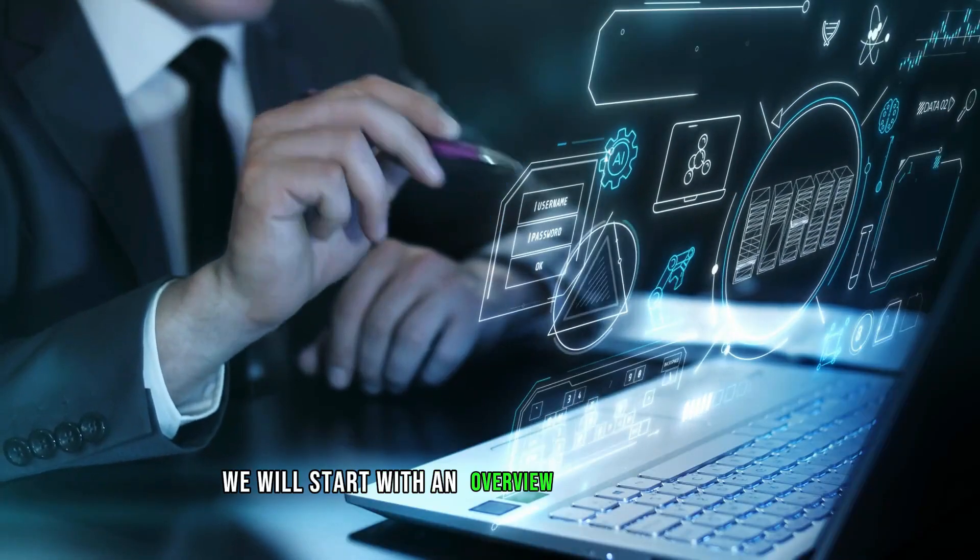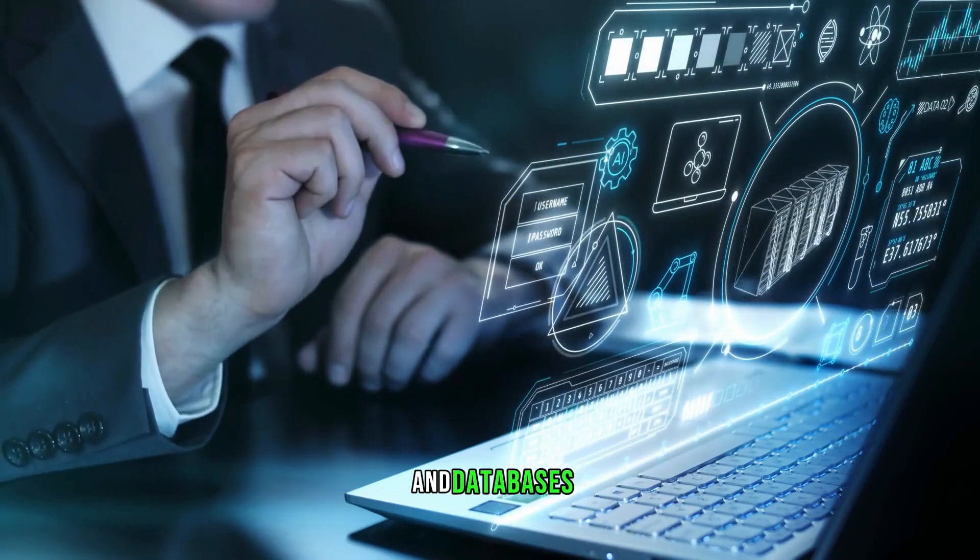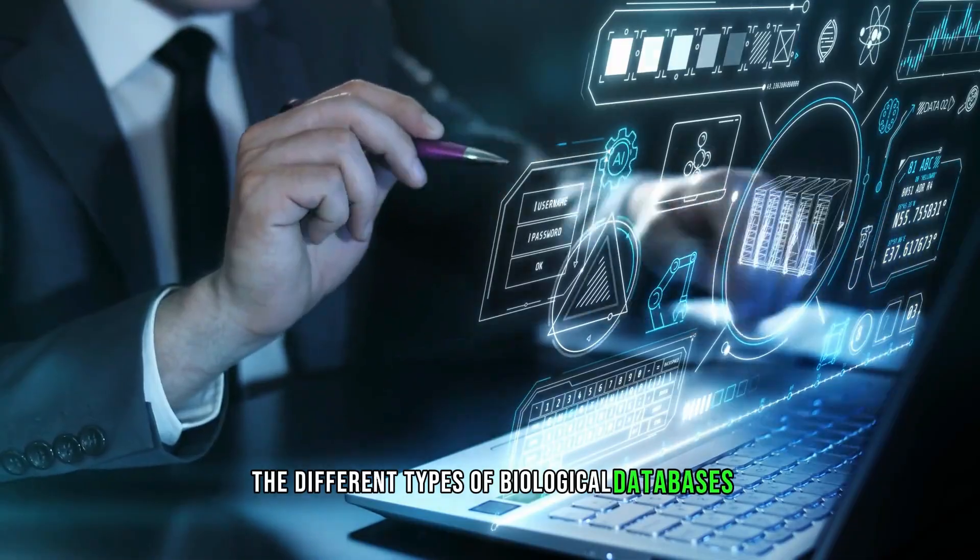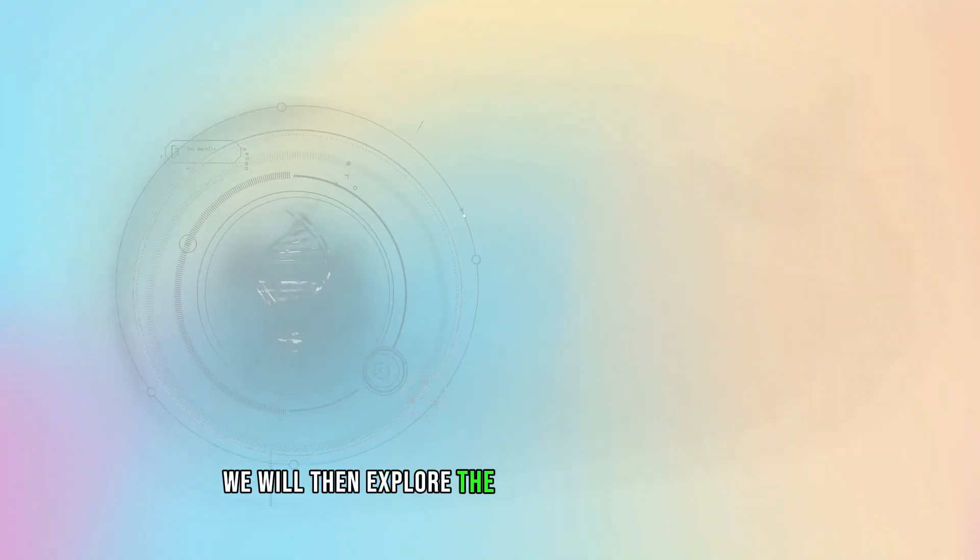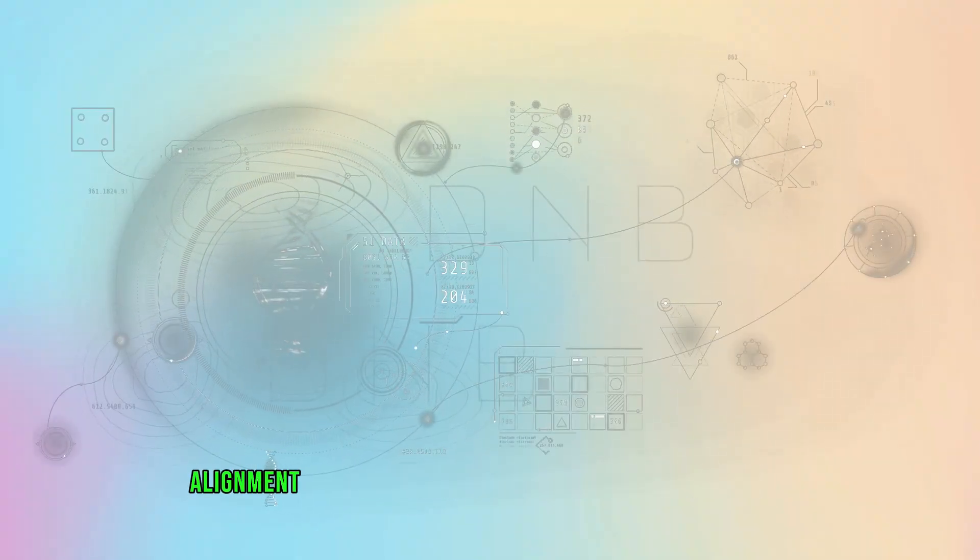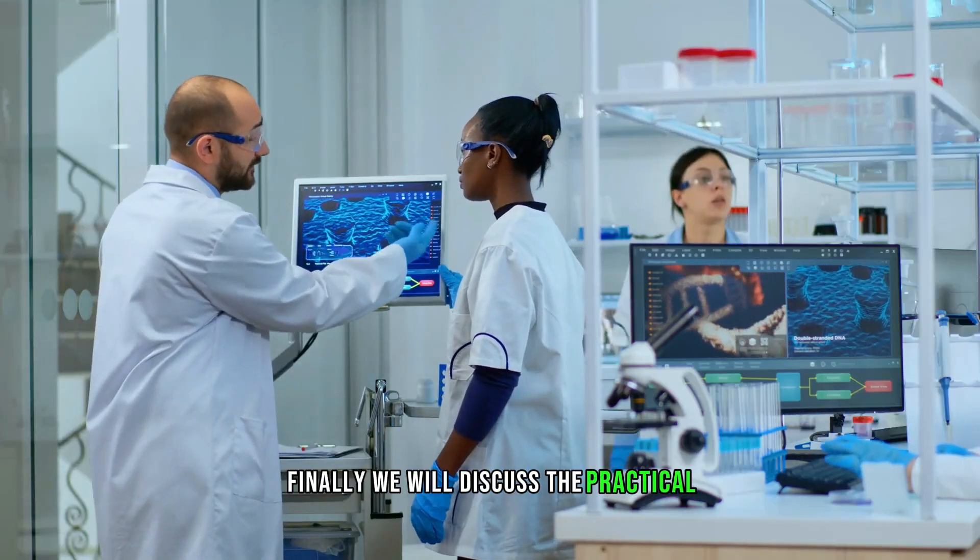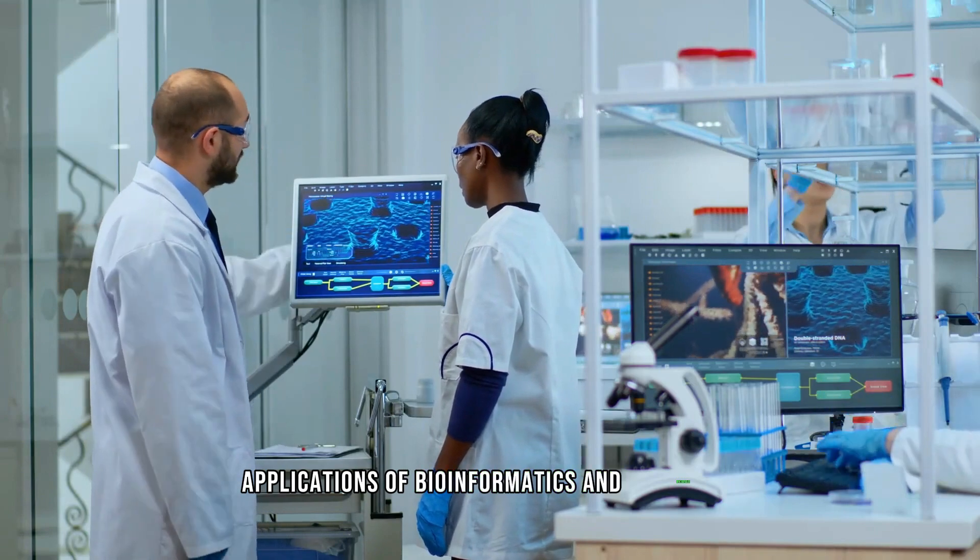Before we begin, we will start with an overview of bioinformatics and databases, followed by a discussion of the different types of biological databases. We will then explore the importance of sequence alignment and the central dogma of molecular biology. Finally, we will discuss the practical applications of bioinformatics and databases.